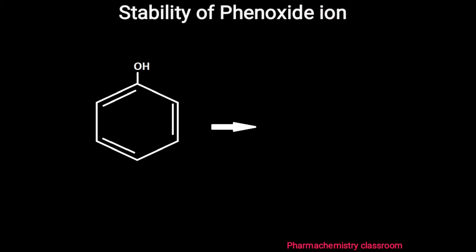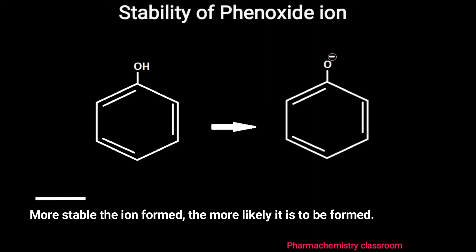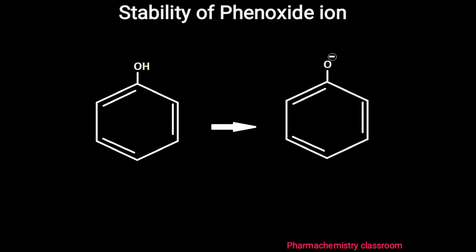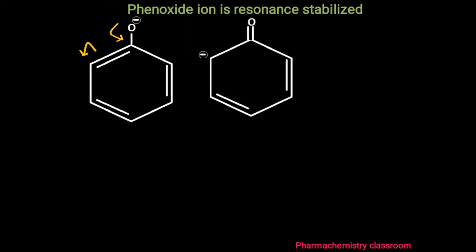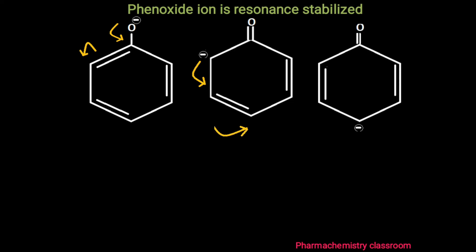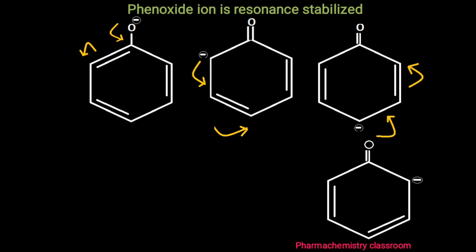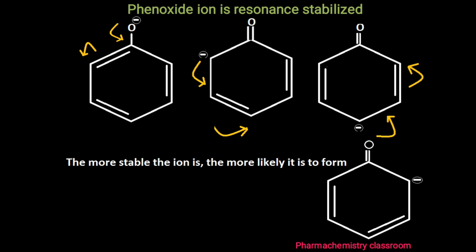The stability of the phenoxide ion is one of the main factors which explains the acidity of phenol. We know the more stable the ion formed, the more likely it is to form. So to study the acidity of phenol in detail we need to know the stability of phenoxide ion. Phenoxide ion is resonance stabilized. The negative charge is not localized on the oxygen but is distributed throughout the ring, which makes it more stable. And this phenoxide ion has more stability than phenol.